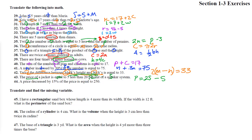Number 44: a price decreased by 15% of the price — that's 0.15 times P — is equal to $250. So P − 0.15P = 250.